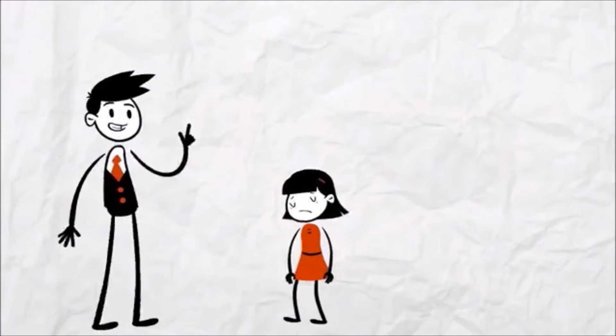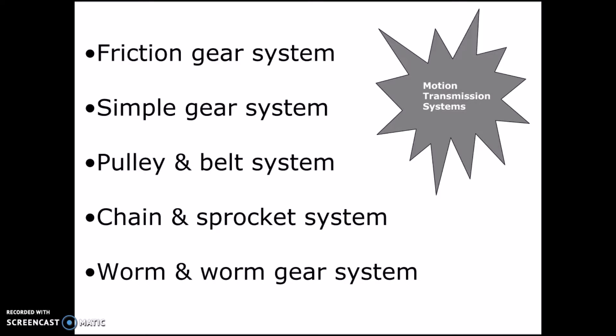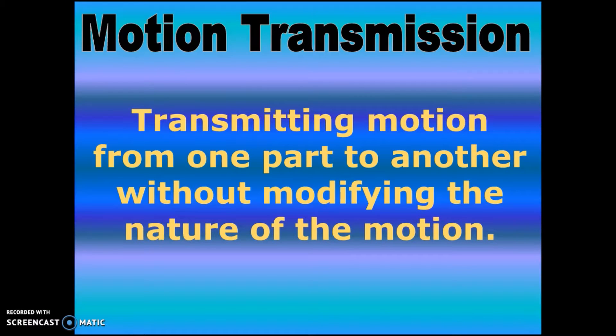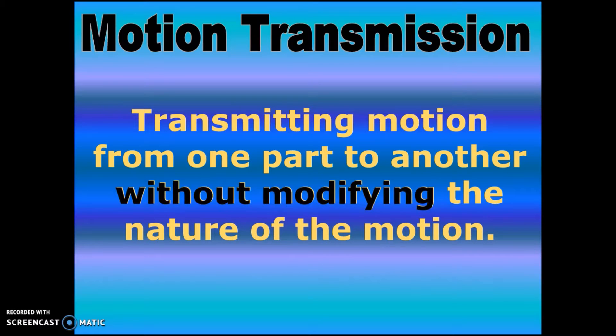We're going to have a look at these five different motion transmission systems. A reminder that transmitting motion means that the motion is being transferred from one part to another without modifying the nature of that motion.